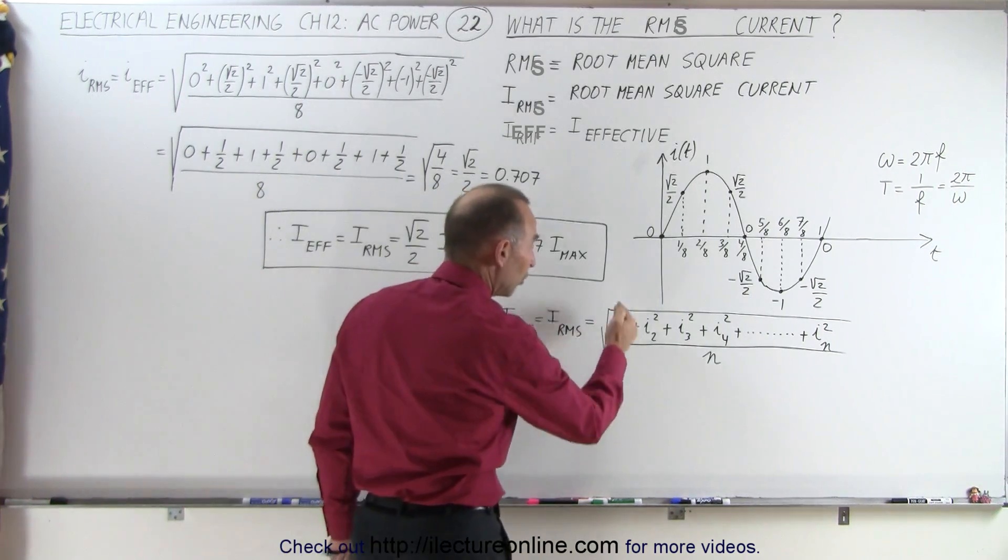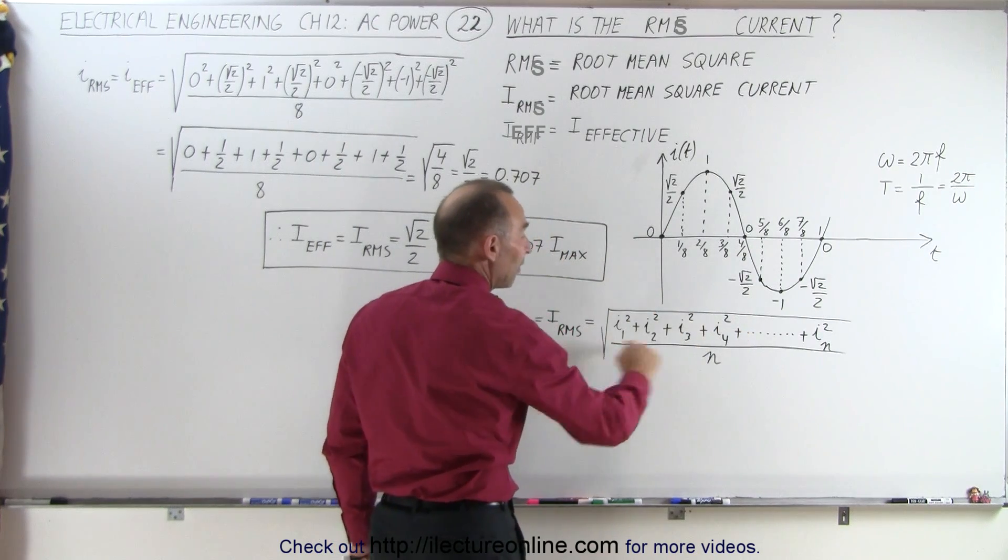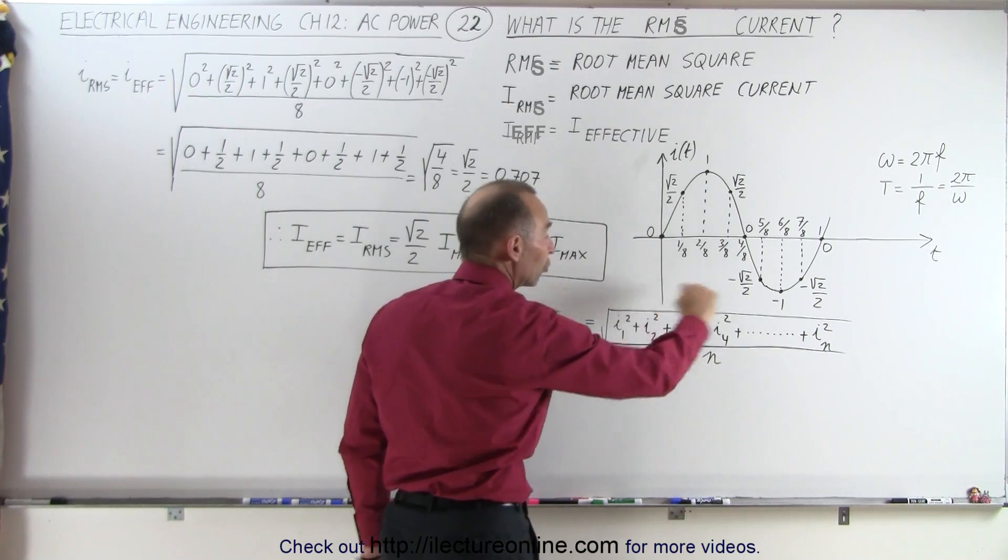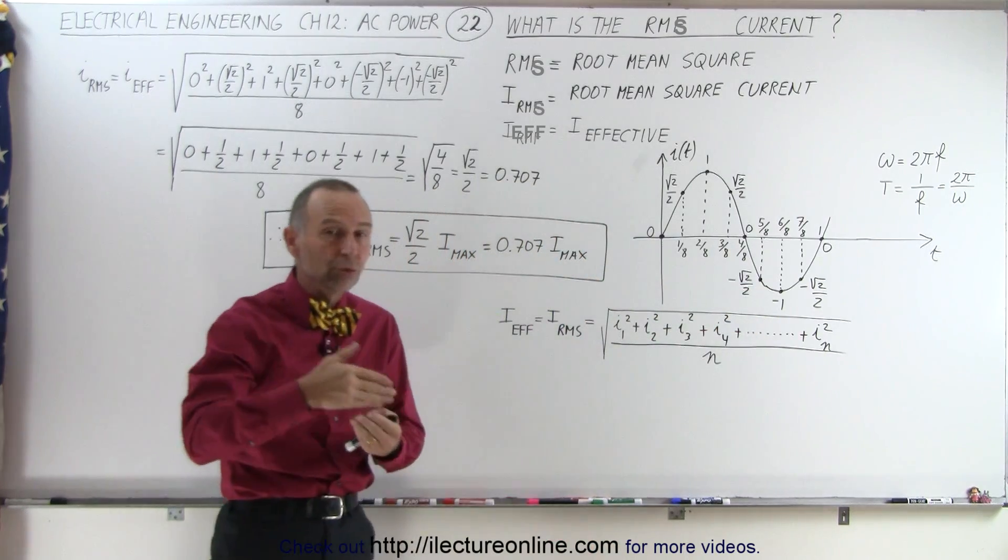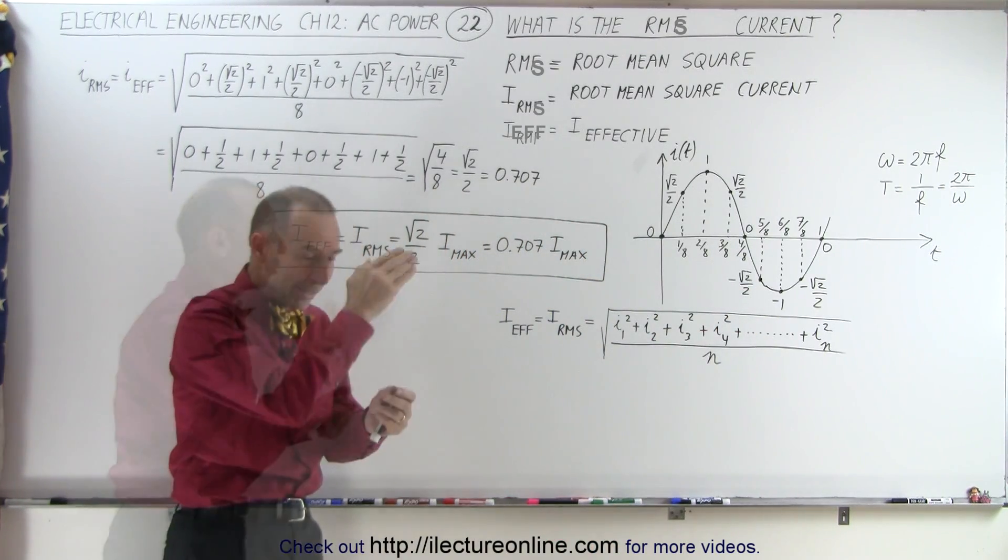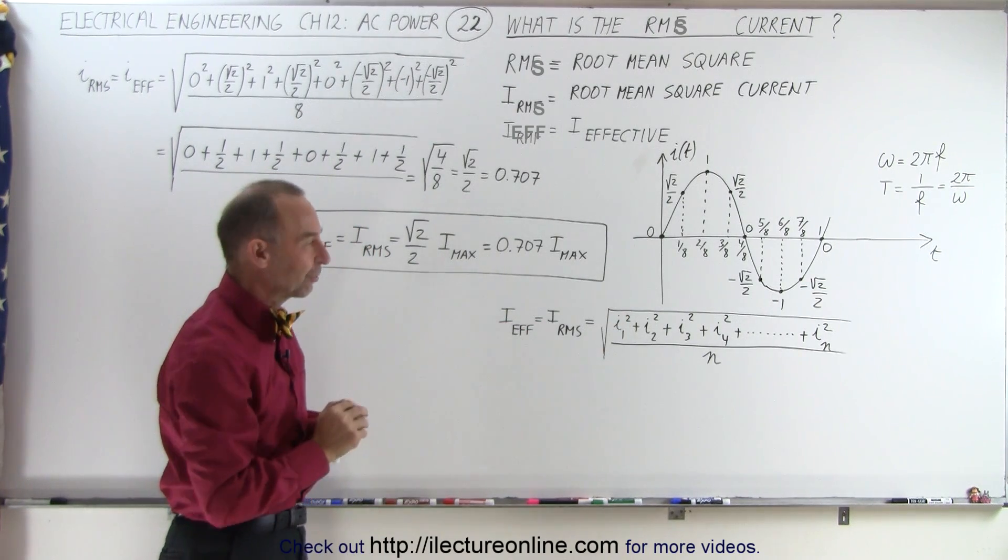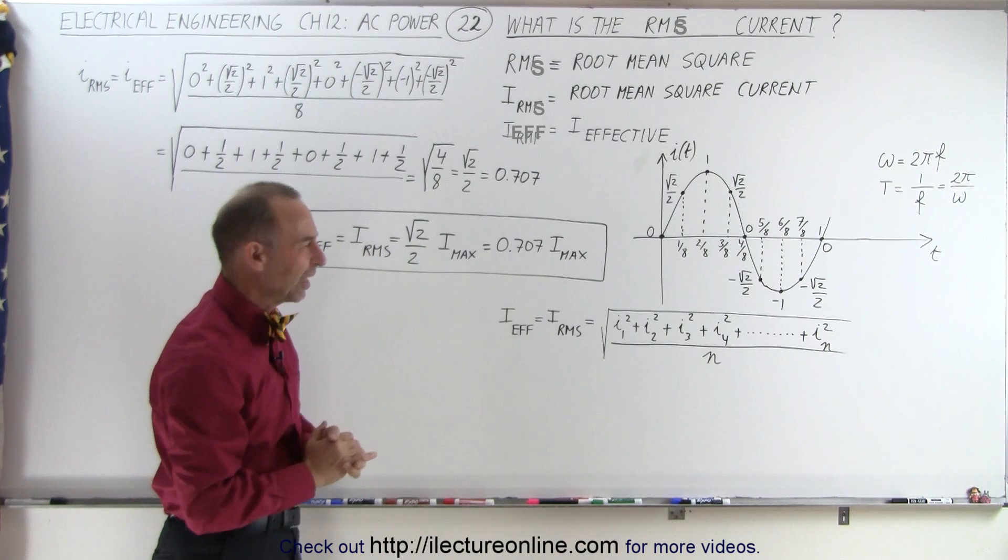We just take every value, we square every value, we divide it by the total, that's the average of the squares, and then we take the square root, and hence the name root mean square. We take the root of the mean of the square values of the samples of the current. That's another way of saying that.